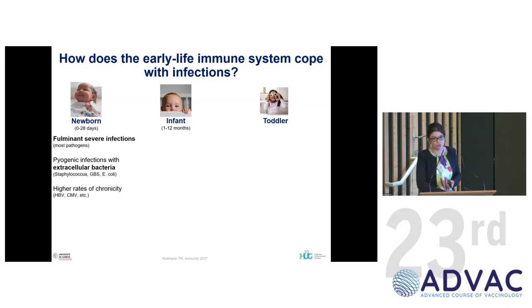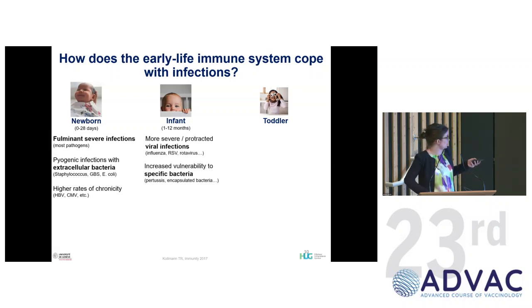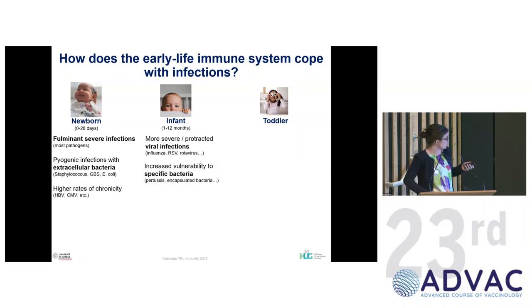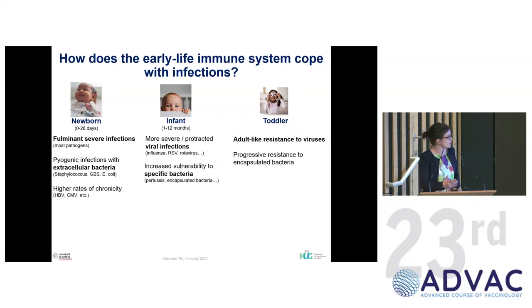Then we have the infant, still with low Th1 and Th17, so still very severe viral infections such as influenza and RSV, and specific bacteria like pertussis and encapsulated bacteria. At the toddler stage, we move toward more adult-like resistance to viruses, and we slowly develop a response to polysaccharides around age two, becoming more resistant to encapsulated bacteria.